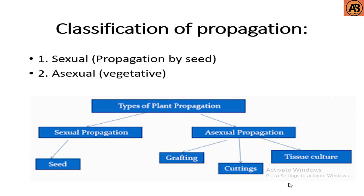Hello guys, welcome to another video. In this video we will learn about the classification of propagation. There are mainly two classifications: first is sexual propagation, which is caused by seed, and second is asexual propagation or vegetative propagation. Asexual propagation is further classified into grafting, budding, cutting, layering, separation, division, micro-propagation, apomyxis, and many more.